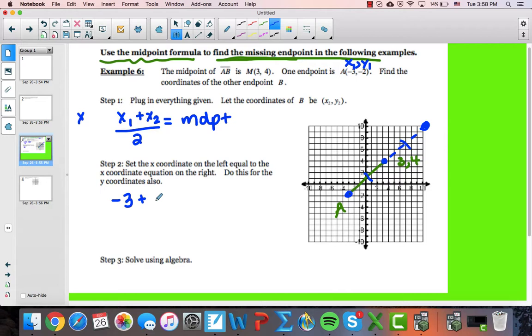So I'm going to let x₁ be -3. x₂ is my unknown, so I'm going to actually put in a different variable. I'm going to put in the variable A and put that over 2. That equals the x-coordinate of the midpoint, which they actually gave me as 3.